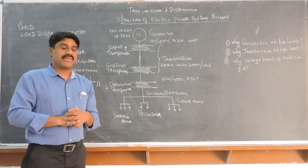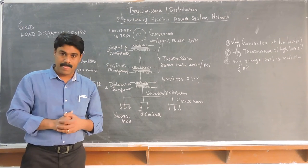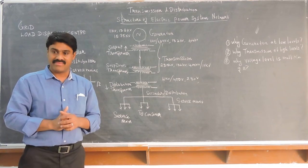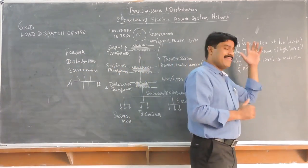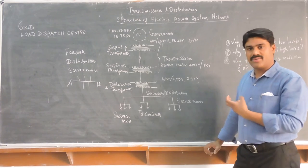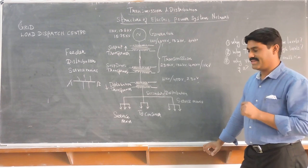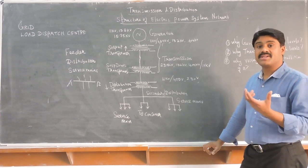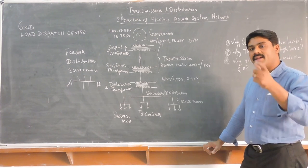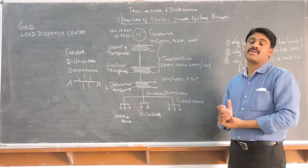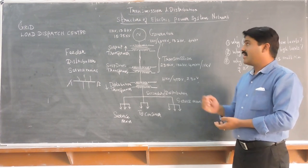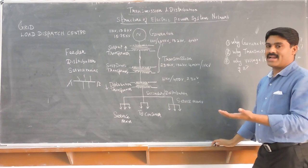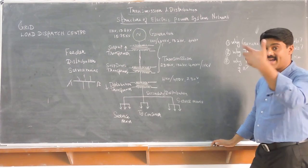In the last video, I asked why we go for low-level generation and why we maintain voltage over multiples of certain levels. Here is the answer. There are many factors, but I will conclude with two main reasons. First, if you go for a higher level of voltage generation, then insulation is a very big problem. Insulating coils for a higher voltage level is not easy — it becomes a tedious problem. Therefore, insulation is the primary reason for keeping voltage generation at a lower level.